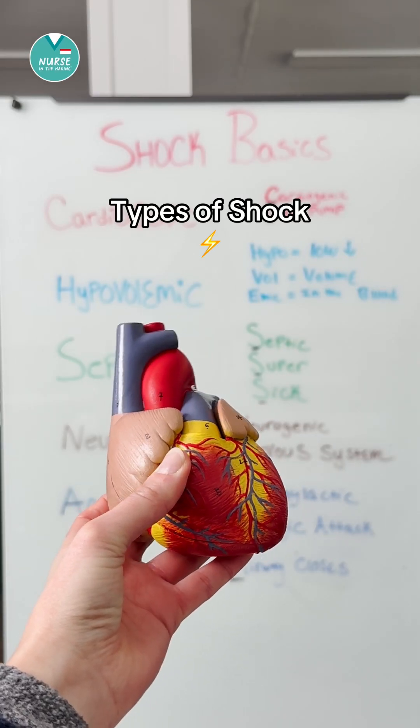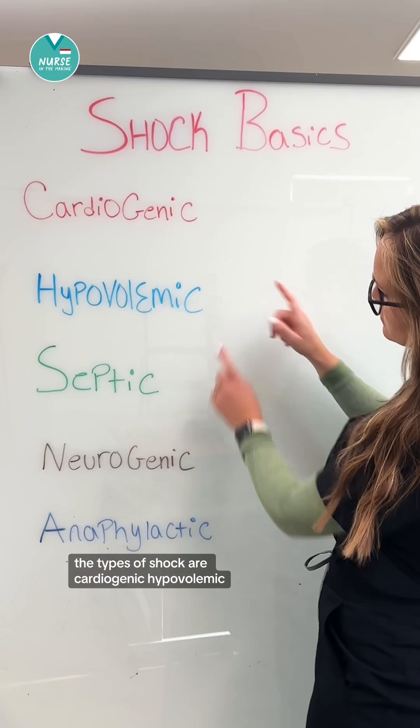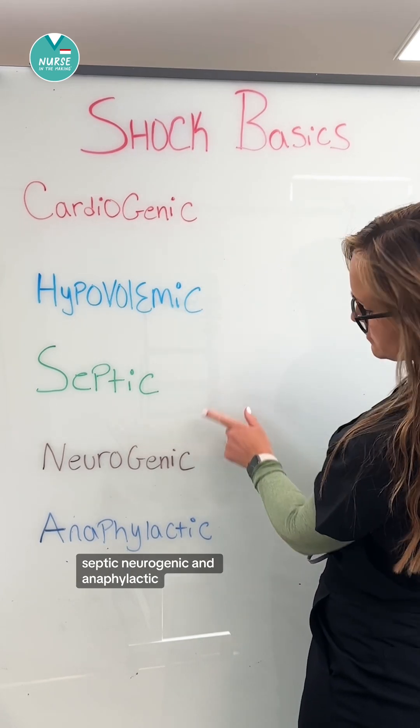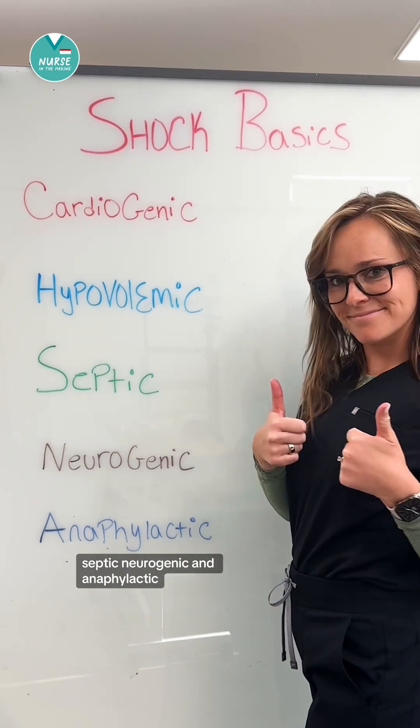Let's go over the types of shock. The types of shock are cardiogenic, hypovolemic, septic, neurogenic, and anaphylactic.